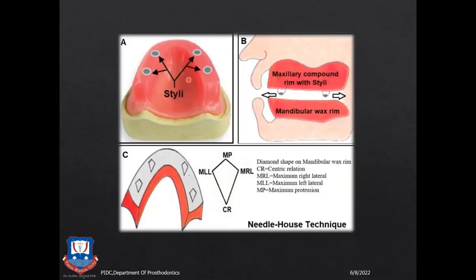The occlusal rims are made out of compound and four studs were advocated by Needle. Later, House advocated using four pointed sharp styli instead of studs, placed in the premolar and molar areas. The patient was asked to close in centric relation and then guided to do protrusive, left lateral, and right lateral excursive movements. This created a diamond pattern — the posterior-most point of the diamond is the centric relationship; the other parts represent the protrusive movement, left lateral, and right lateral movements.